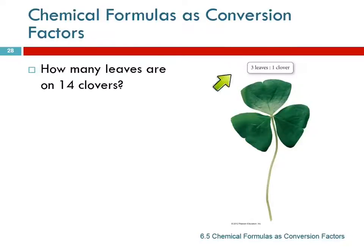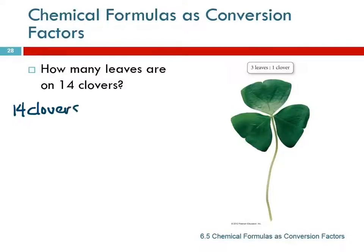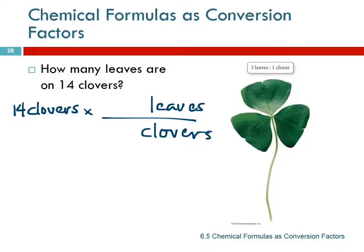So you are using a conversion factor. There are three leaves on one clover. If I have 14 clovers — let me start drawing here — 14 clovers, and I want the number of leaves. I'm going to multiply by the number of leaves, divide by the number of clovers. There are three leaves to one clover. And so, 14 times 3 is 42 leaves.